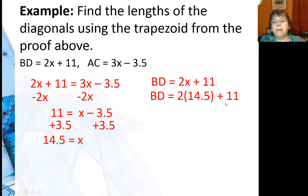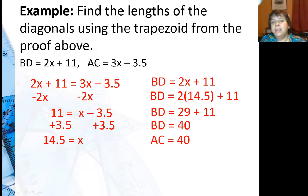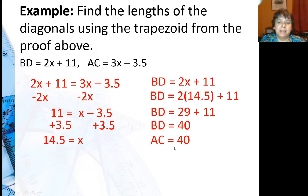2 times 14.5 minus 11 — that's 29 minus 11, which is 40. I can also find AC and set it equal to 40. It would actually be a good idea to substitute the 14.5 in here: 14.5 times 3 is 43.5, minus 3.5, that's 40 — so that does work. If you were just trying to save time and made sure you didn't make a mistake, you could just say it's definitely the same length — it's 40.